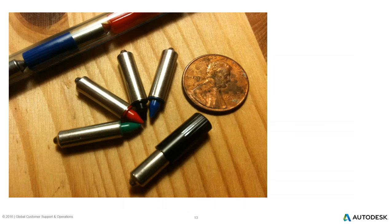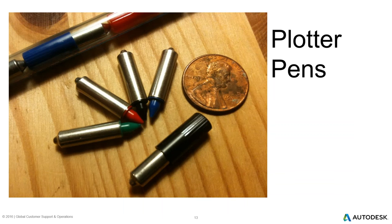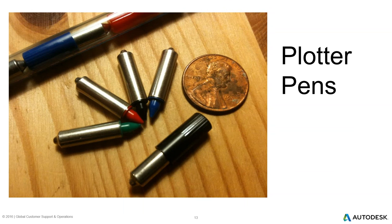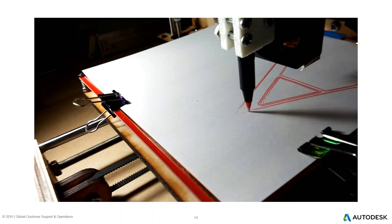We've come a long way. Those objects that look like lipsticks or crayons are actually pens from an early pen plotter — from a Commodore plotter. A penny is shown for size reference; they were quite small. Those little pens were attached to servos and motors that would move across the paper, literally drawing your lines based on what you were doing in your early CAD program. People have since made devices to act like those former pen plotters.